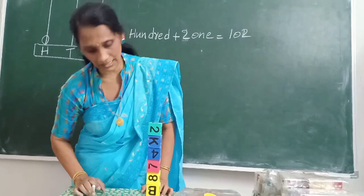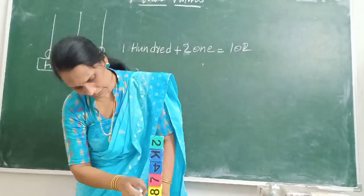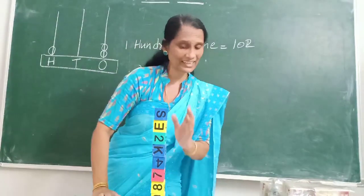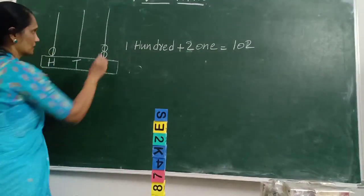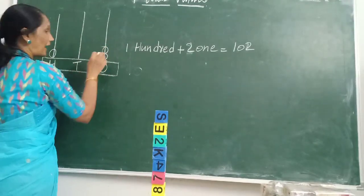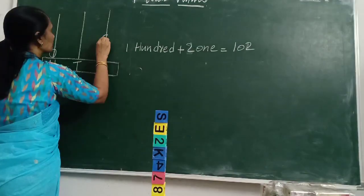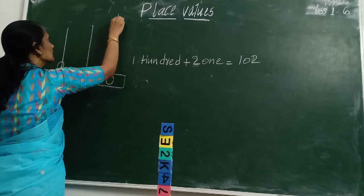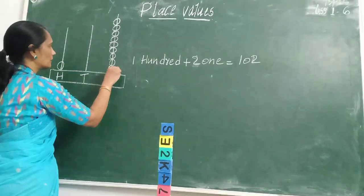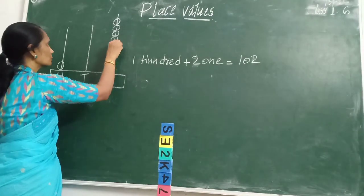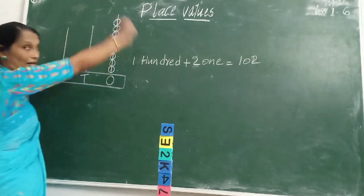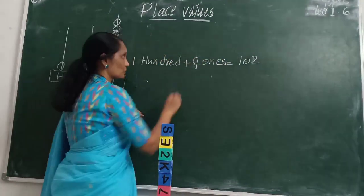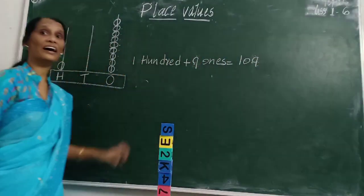5 blocks, 105. 6 blocks, 106. 7 blocks, 107. And 8 and 9 blocks — 100 and 9 blocks. So 9 blocks means we have to represent by 9 beads. 9 beads: 1, 2, 3, 4, 5, 6, 7, 8 and 9 beads.